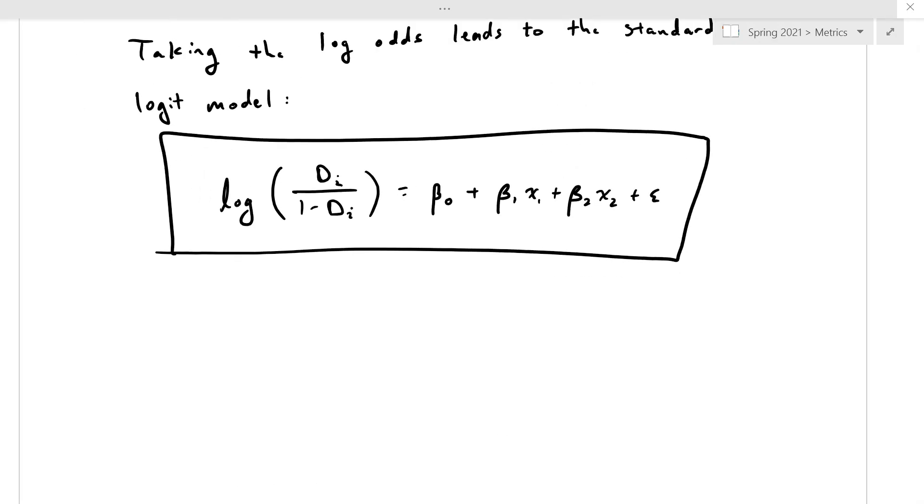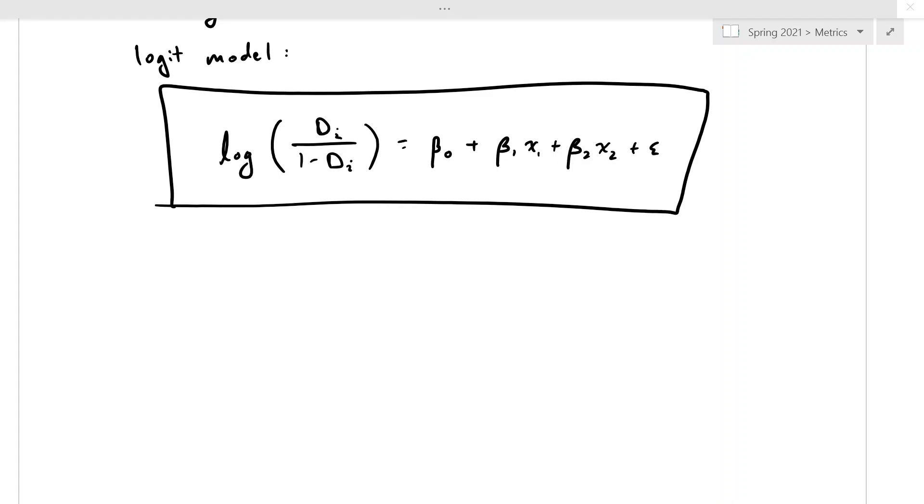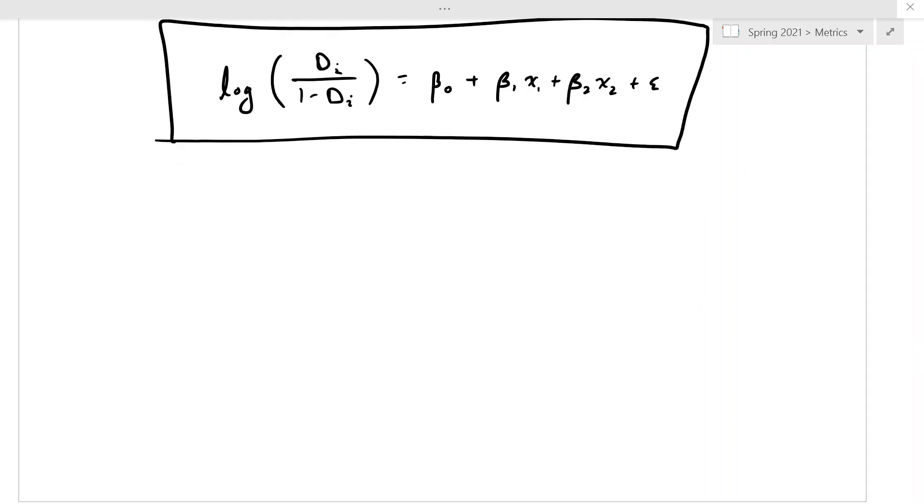And that ultimately we'll just do in the software. And then, let's talk about how this helps remove our unboundedness problem. All right, just like we did with the linear probability model, let's draw what this is going to look like on a graph. So, how does this solve, or remove, the unboundedness problem?